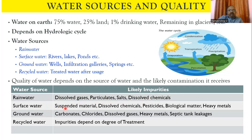Similarly, surface water receives wastewater from domestic sources, industrial sources, agricultural wastewater, and stormwater — all these things are now entering into surface water bodies. Because of this, surface water has a lot of suspended material, dissolved chemicals, pesticides, biological matter, and heavy metals. For groundwater, the water is percolated to the subsoil, but carbonates, chlorides, dissolved gases, heavy metals, and septic tank leachate are the waste sources. Particularly where seawater or saltwater intrusion occurs in coastal areas or near aquaculture plants, there will be a lot of salt content in the water.